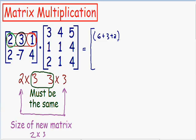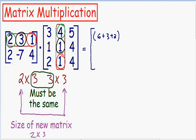Now I want to do the same thing with the first row and the second column. The first row is still boxed from earlier, and I will put another box around the second column. Once again I'm going to circle the first number in green, the second in black, and the third in red. Multiplying the green numbers: 2 times 4 is 8. The black numbers: 3 times 1 is positive 3. The red numbers: 1 times 1 is positive 1. Now we have multiplied the first row by the second column.